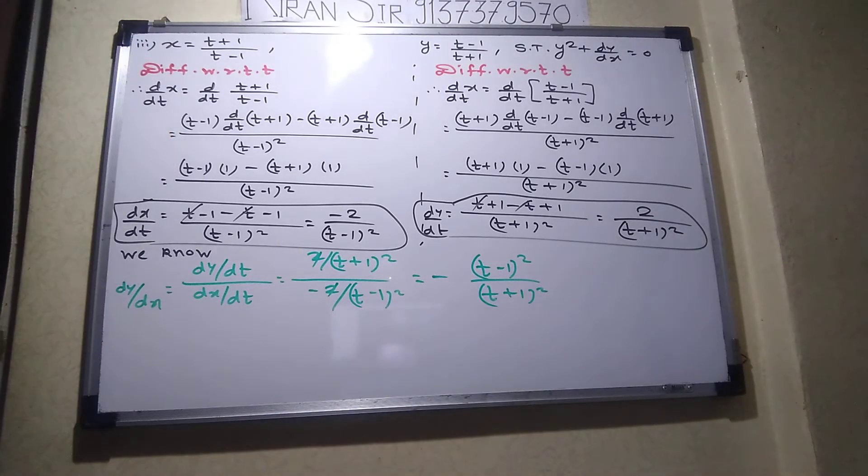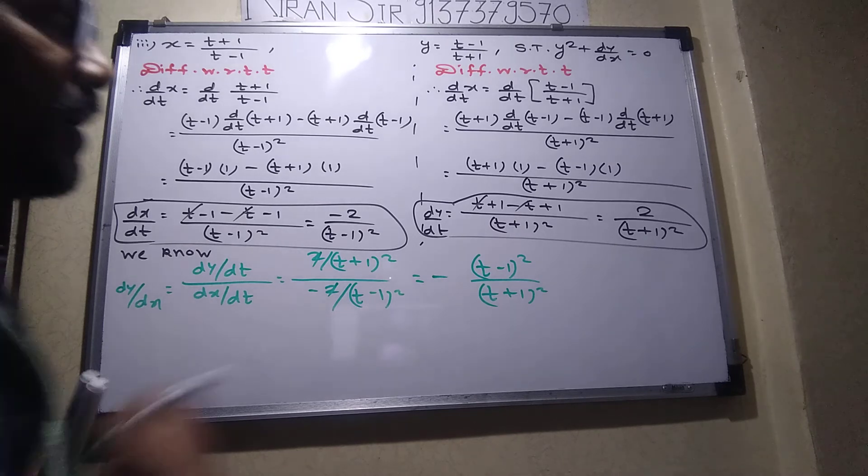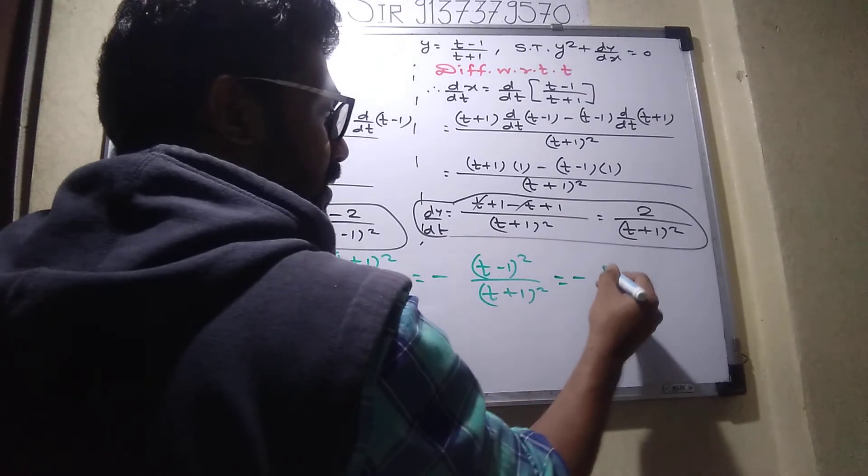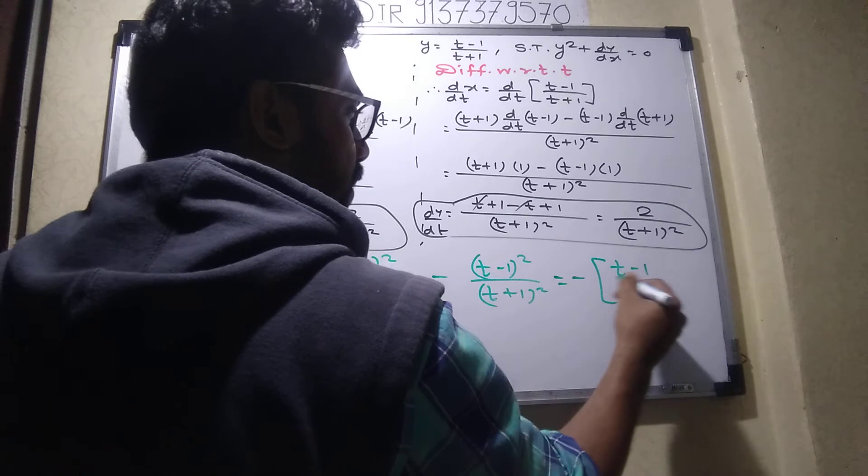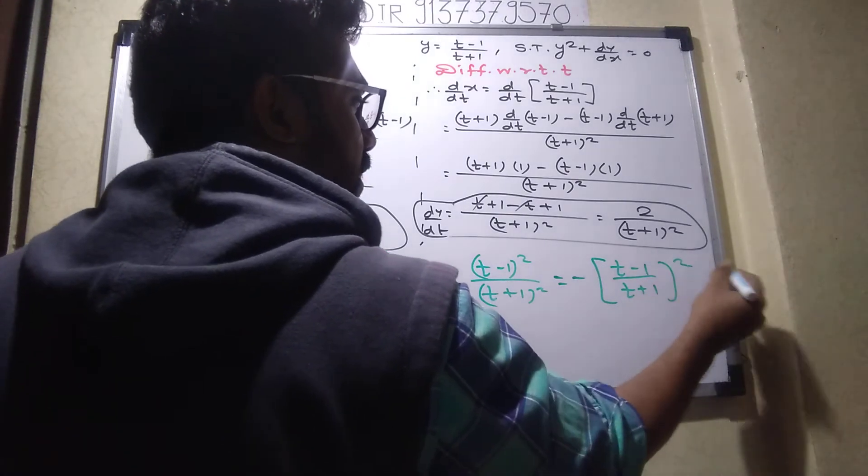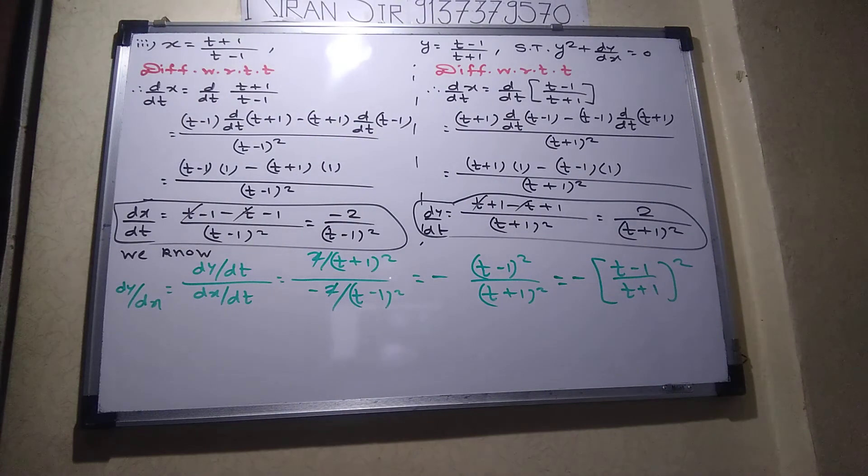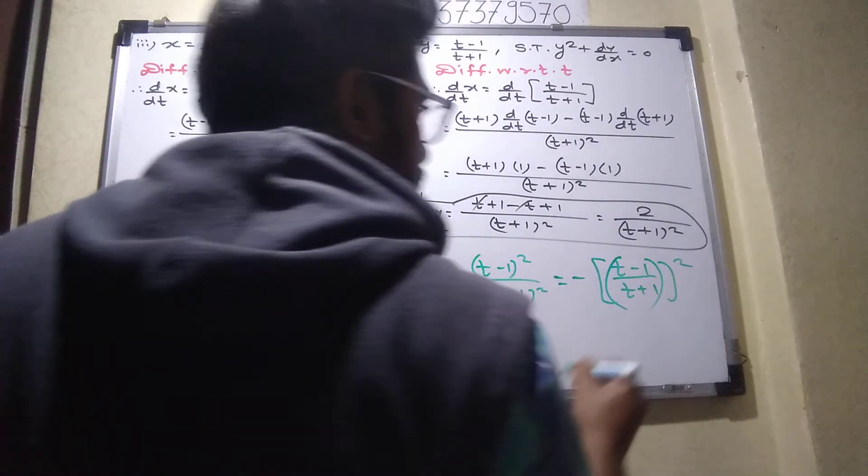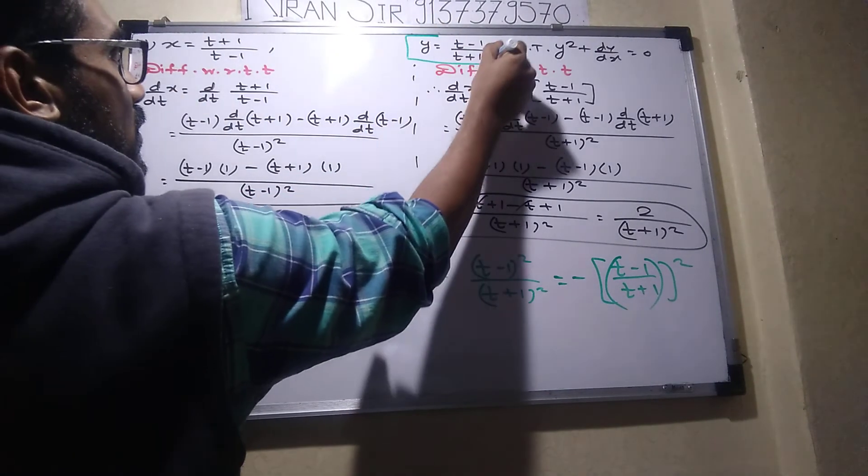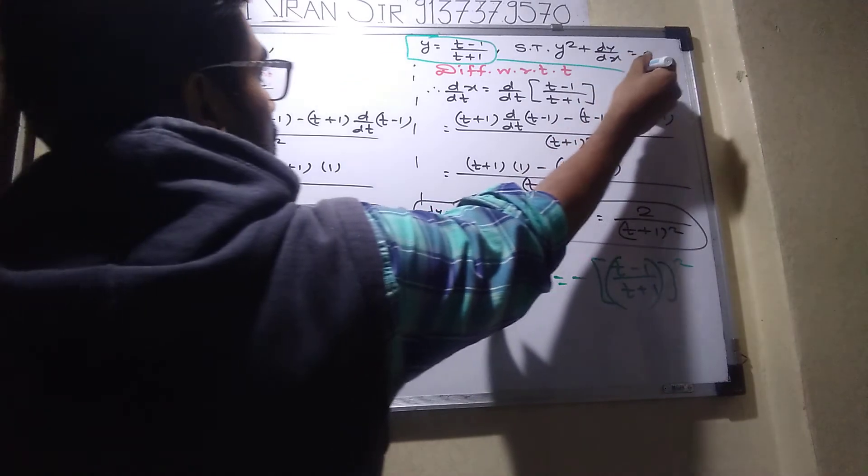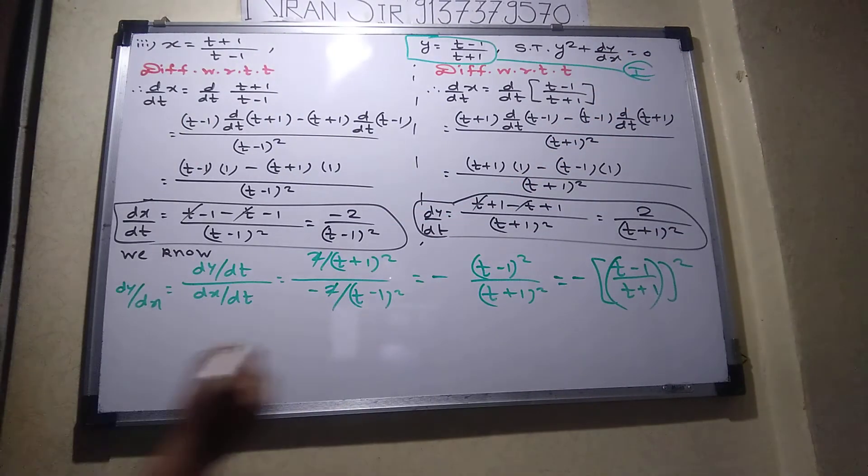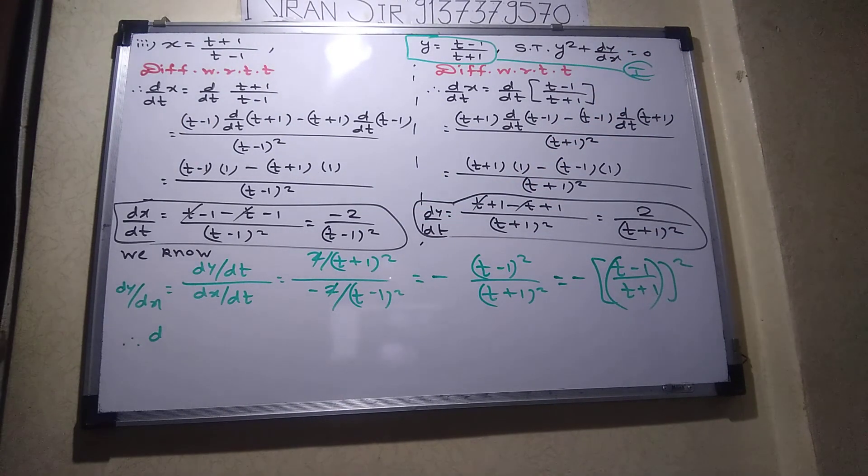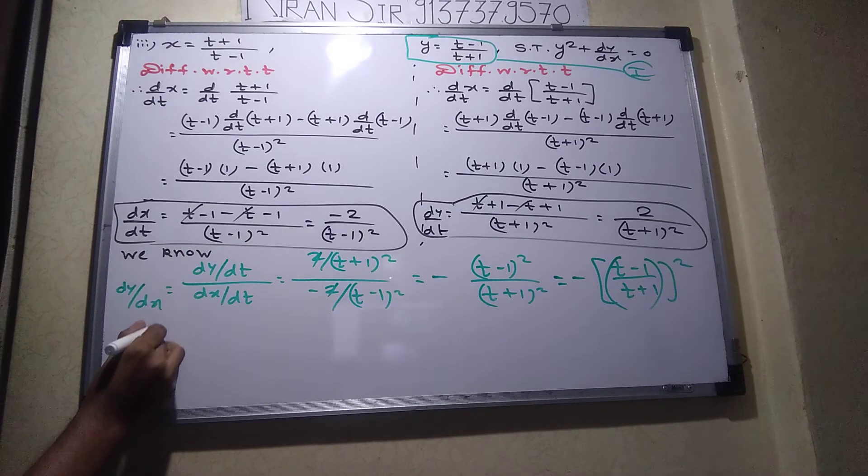You can understand this? Everyone understood? a b square, a b square. So I can write t minus 1 upon t plus 1 the whole square. Will you tell me what t minus 1 upon t plus 1 is? What is that?